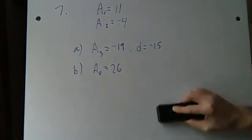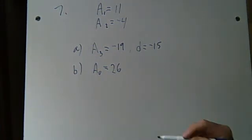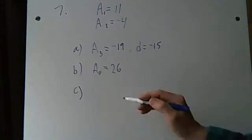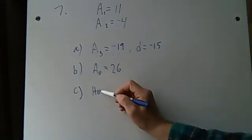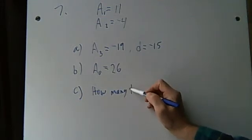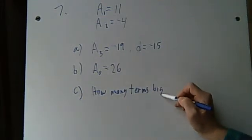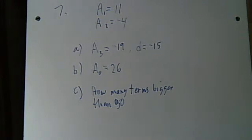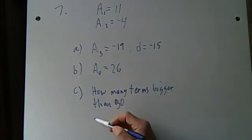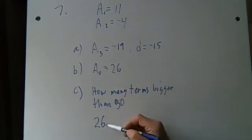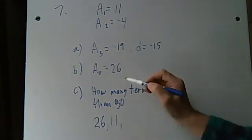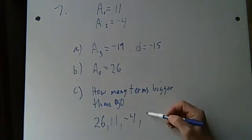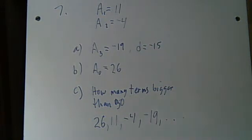Okay. That's question b. Now part c, it says, part number 7, that's right. Yeah. It says, how many terms in the sequence are bigger than 30? 30. Okay. Well, let's take a look at this. The way this sequence actually goes is, the first one, a0 was 26. Then a1 was 11. A2 was negative 4. A3 was negative 19. Dot dot dot sequence.